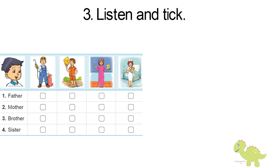Page 13. Activity 3: Listen and tick. What does your mother do, Kwan? She's a teacher. How about your father? What does he do? He's a factory worker. Do you have a brother? No, I don't. But I have a sister. What does she do? She's a nurse. OK. Thanks for your time, Kwan. You're welcome.